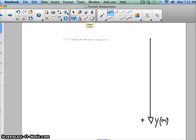And it looks like a body falls 300 meters starting from rest. So I'm going to define my zero position to be where my object starts.